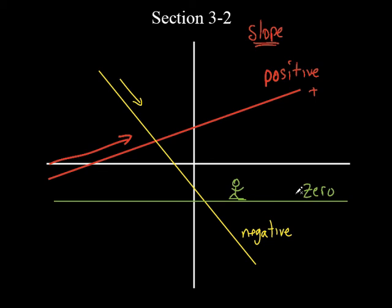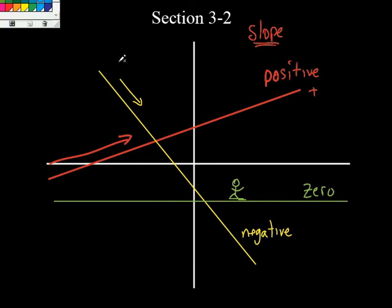Zero does exist. Somebody said it's no slope — no. There's something else that's no slope. This is actually a slope. You can actually go to a ski resort and find a place and ski on something like this. So it does exist, but it's just a zero slope. What if you had a line that went straight up and down?